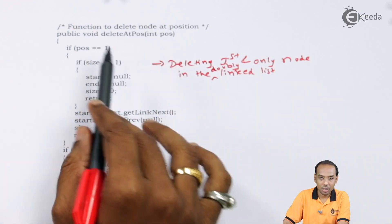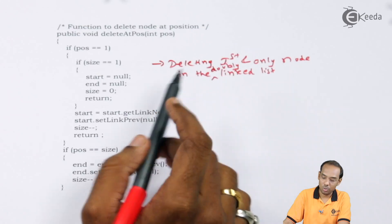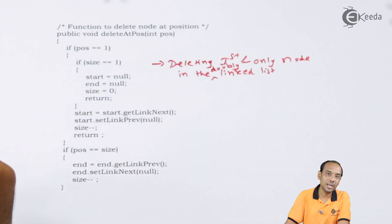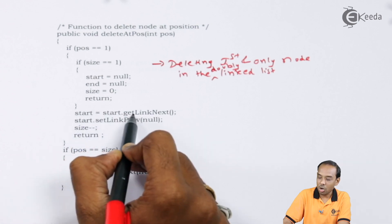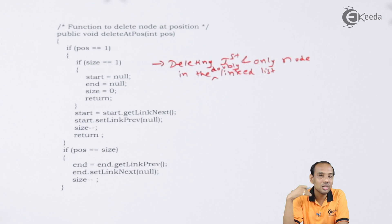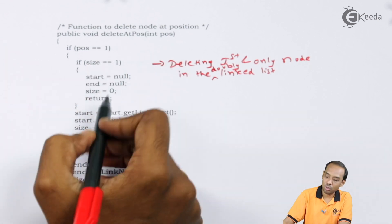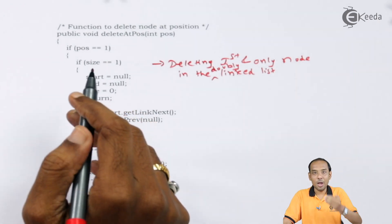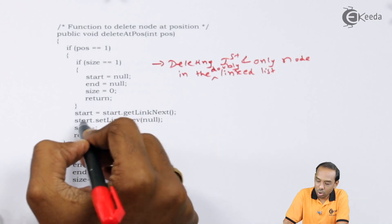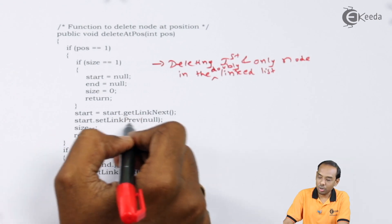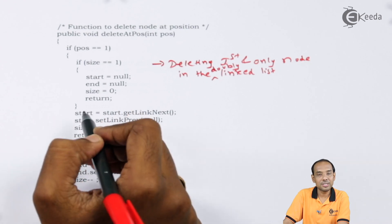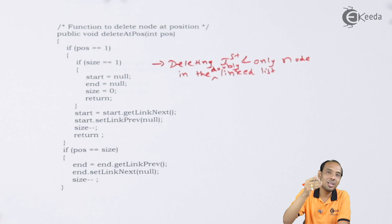If size is not equal to one, we check various values. We are going to point start to start.get_link_next — whatever the value of next is will be stored into start. Now start is pointing to the second node, so its previous link is set to null using start.set_link_previous(null). After that we decrement the size: size minus minus. These values are to be written back to the calling function.